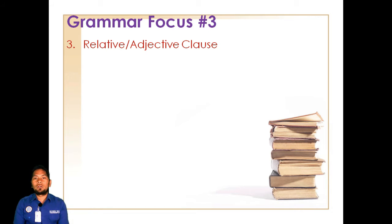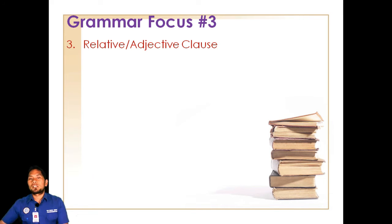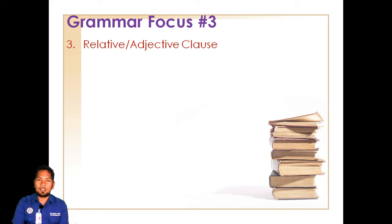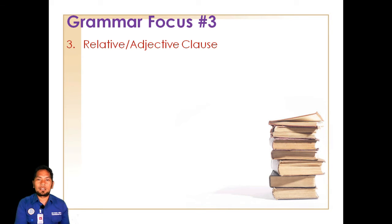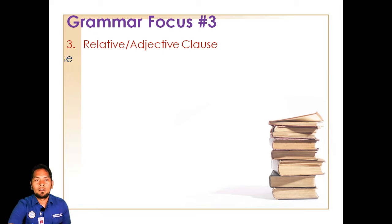Kalau adjective itu hanya untuk menjelaskan kata benda, sedangkan adjective clause bukanlah sekadar menjelaskan kata benda — dia menjelaskan sesuatu yang lebih spesifik atau memberikan informasi yang lebih mengenai si subjek dengan cara yang berbeda. Jadi jangan disamakan adjective dengan adjective clause. Adjective clause adalah phrase atau gabungan kata yang memberikan informasi lebih tentang si subjek atau tentang siapa yang dijelaskan.